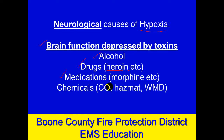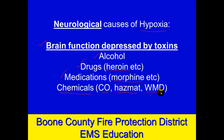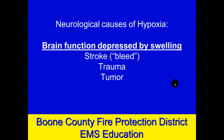It could be medications given for treatment — morphine comes to mind, and morphine and heroin are cousins. It could also be chemicals. Carbon monoxide doesn't just take up space on red blood cells that should be for oxygen — it also directly depresses brain function. It could be some other bizarre chemical with an effect on the brain, or certainly a terrorist-type weapon.